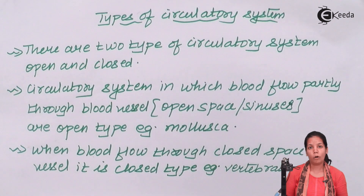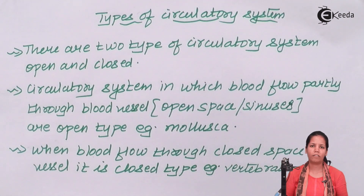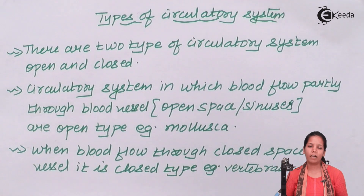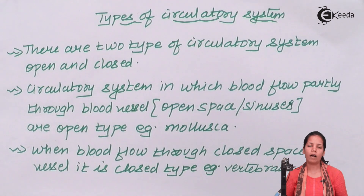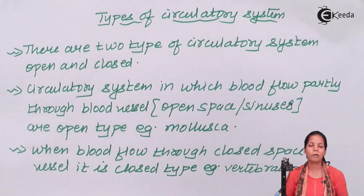In the open type, there are not as many blood vessels. The blood will flow from the heart, then to the aorta, finally to the open spaces which are also called sinuses, and then back to the heart through ostia. That's how the open type works.